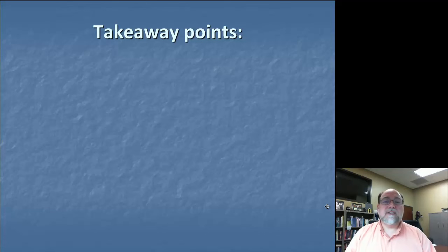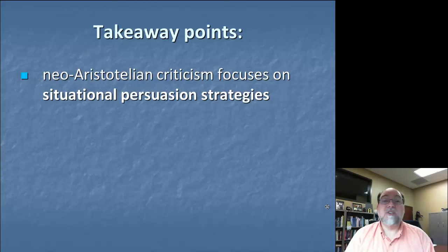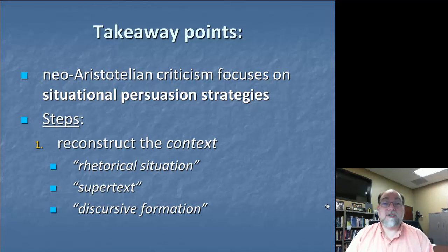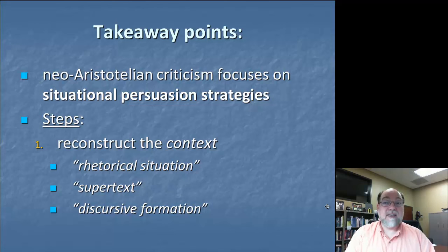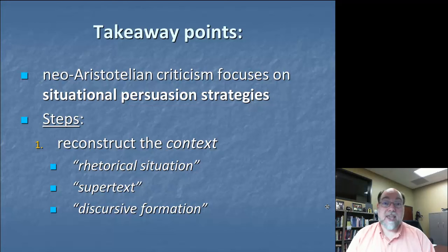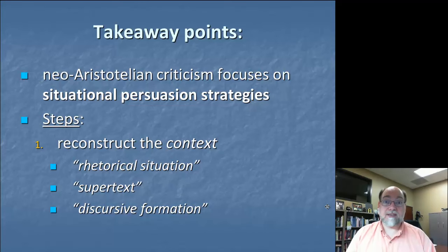Okay, so what we've done in this lesson is try to focus on a number of different ways of understanding the context of a rhetorical act, which is the first key component of neo-Aristotelian criticism. We want to remember that neo-Aristotelian criticism focuses on situational persuasion strategies. So the first step is reconstructing the context, and through our research and analysis, we can focus on this context in a number of different ways: the exigences, audiences, and constraints of the rhetorical situation; the supertext that precedes and surrounds the rhetorical act; and the discursive formation of discourse rules and norms that govern how communicators and audiences perceive and understand reality. In the next lesson in this two-part series on neo-Aristotelian criticism, we're going to focus on the next two steps — analysis based on the canons of rhetoric and assessing the impacts on the audience. See you next time.